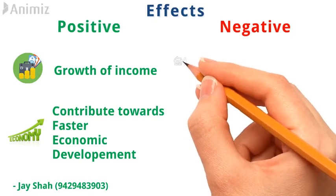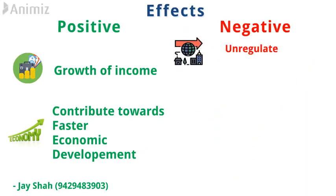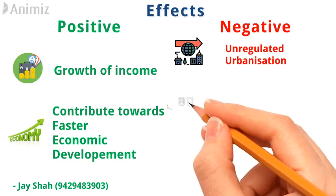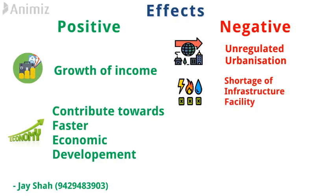Negative effects of migration — first is unregulated urbanization. When an unskilled and uneducated person migrates to an urban area, he will not be able to get sufficient income, and as a result has to live in hutments and slums on the outer range of urban areas, making urbanization unregulated. Second is shortage of infrastructure facilities: hutments and dirty slum areas make local administration ineffective, so they cannot provide enough water, drainage, roads, transportation, communication, toilets, education, schools, or health services. All these result in serious health issues, and the poor class is affected by life-threatening diseases.